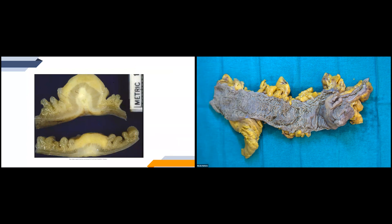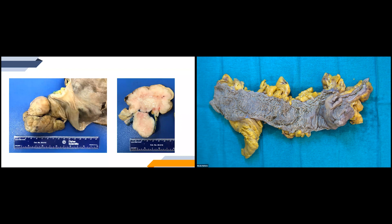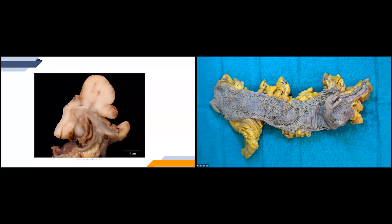This one is a leiomyosarcoma that I actually grossed earlier this year. You can see with the cut surface it's very white, kind of pink and fleshy in appearance — a lot different than those other two we just saw. So when you have a cut surface like this, you want to be thinking this could be a leiomyosarcoma. And here's our last gross feature picture: a lymphoma arising right at the ileocecal valve. You can see that white homogenous mass beginning to grow right at that intersection.